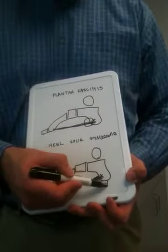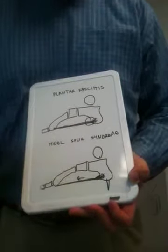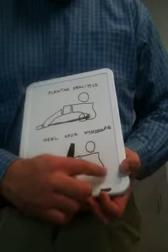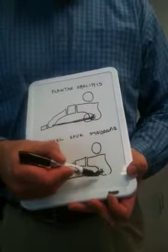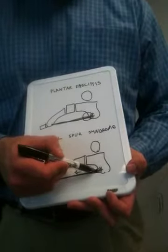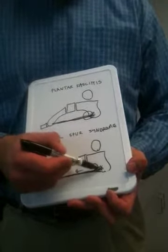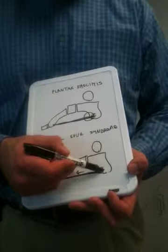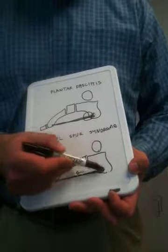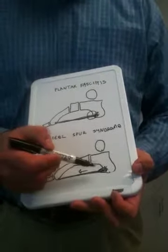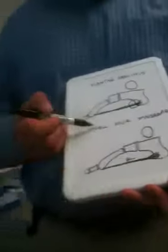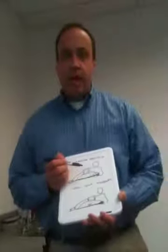A heel spur is not something that sits down on the bottom of the foot and jabs you with each step that you take, though our patients feel that's how it feels sometimes. A heel spur is parallel to the ground — it does not jab you when you take a step. It is more just a bone growth as a result of the trauma caused from the plantar fascia pulling on the heel, and the tight plantar fascia pulling that bone away from the heel as the bone tries to make new bone. So that is the difference between plantar fasciitis and heel spur syndrome. I hope that helped. We'll have more video blogs in the near future. Thank you.